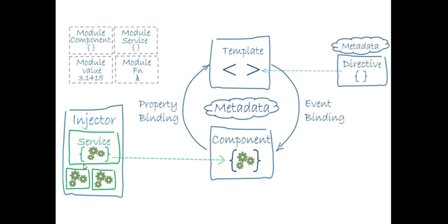The HttpClient and all related things will be injected in the service — not imported directly in the component. The service will handle HTTP GET, HTTP POST, or any interaction with the server. This service will then be injected into the component with the help of an injector, which relates to dependency injection.